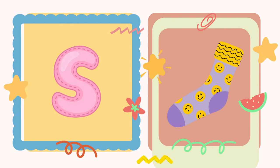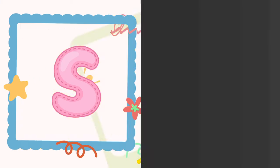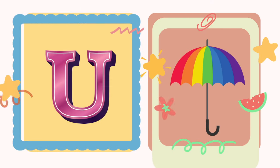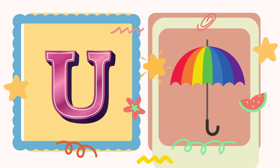S. S is for socks. T. T is for tree. U. U is for umbrella.